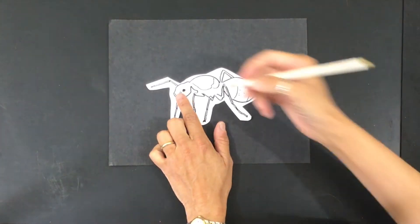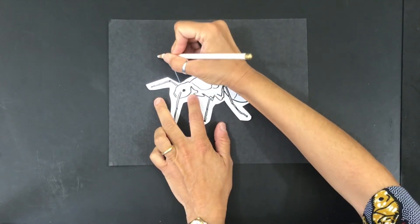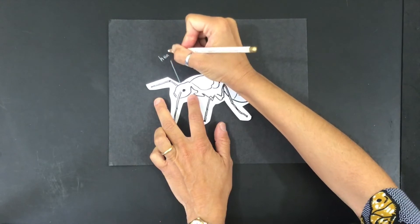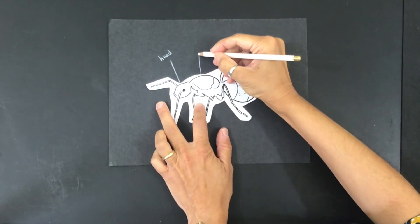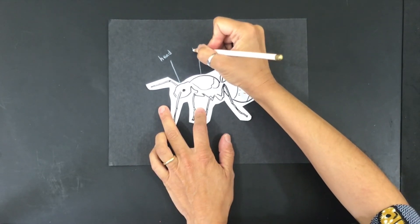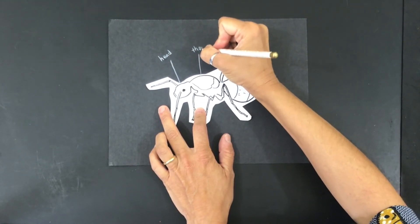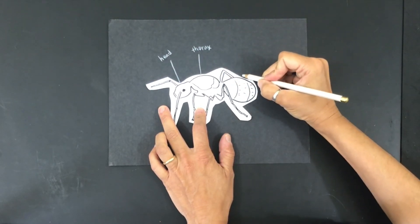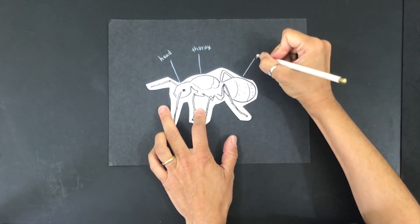Let's start here. That's right — the head. Anybody remember the middle body part? That's right, the thorax. And what about this body part? The abdomen.